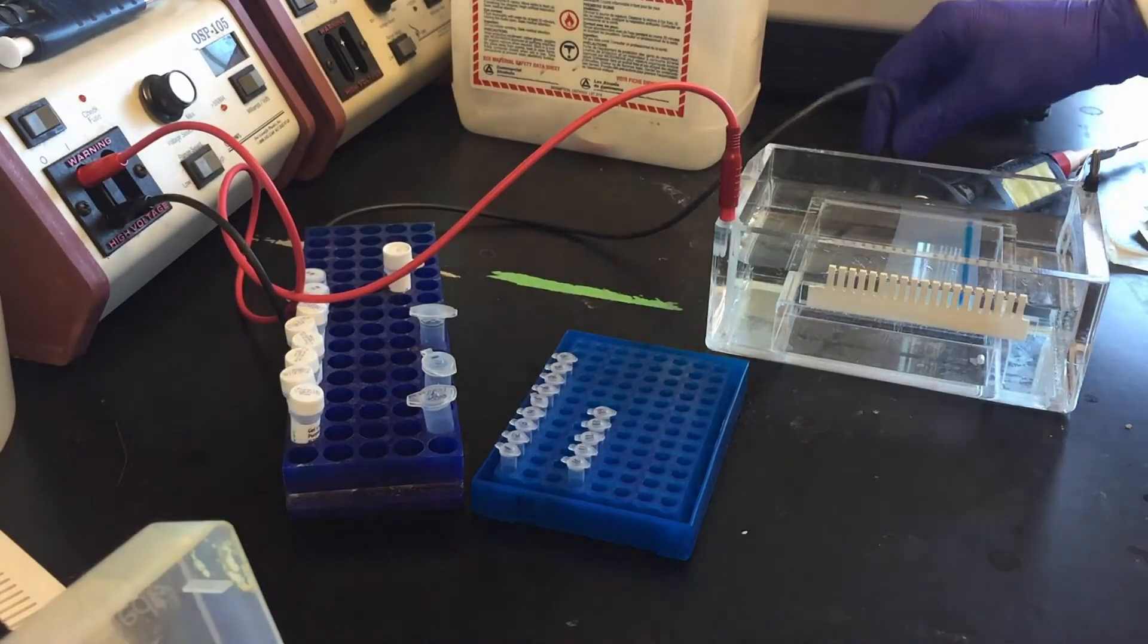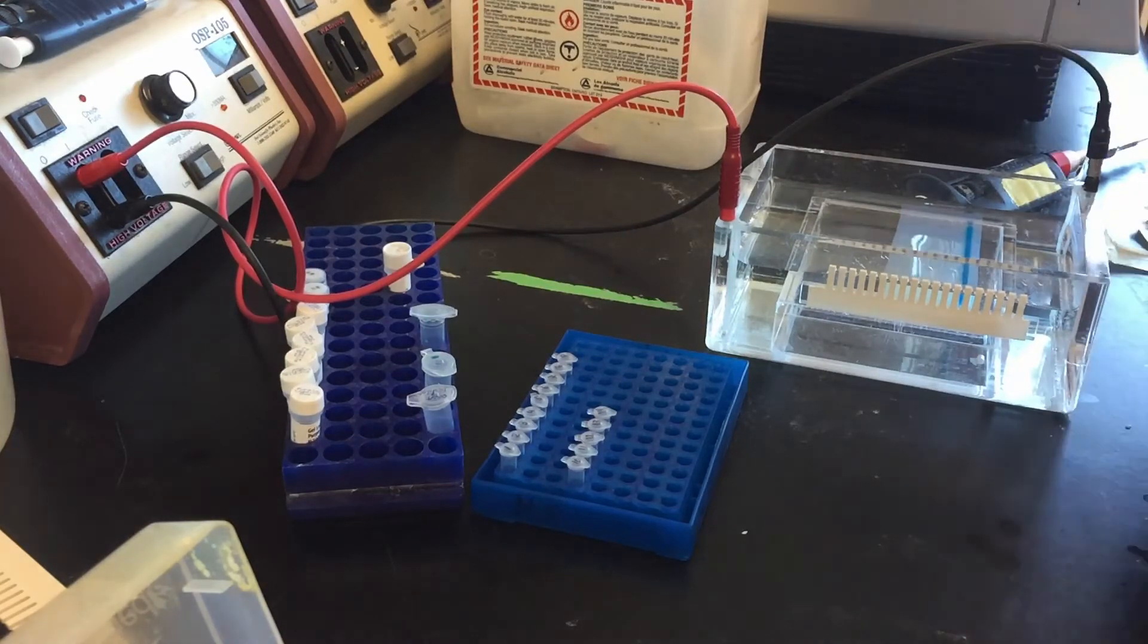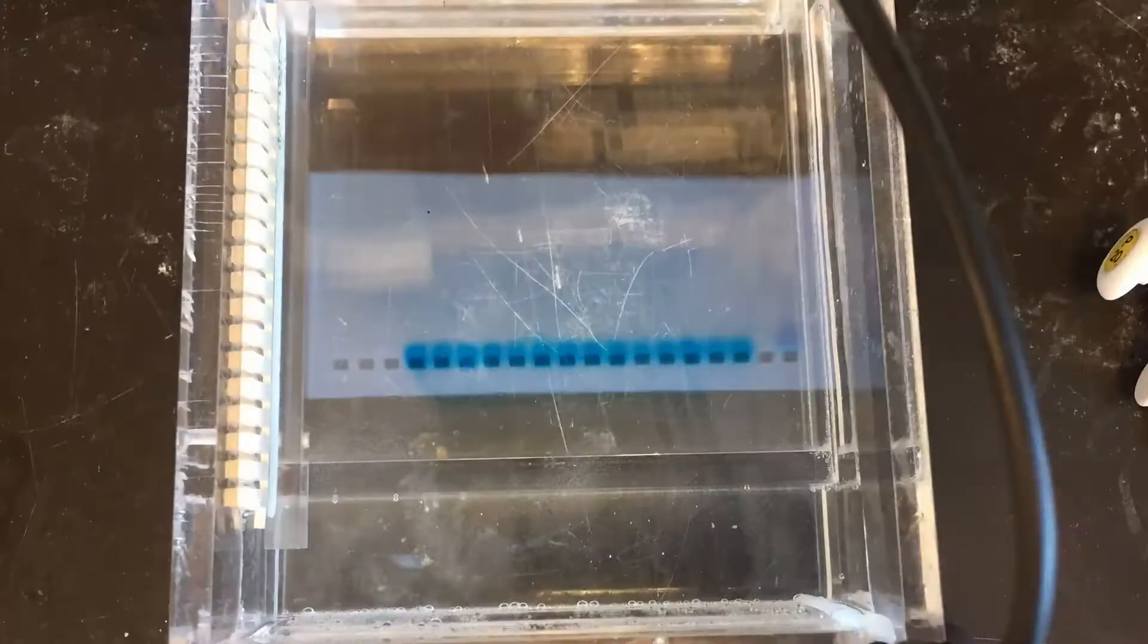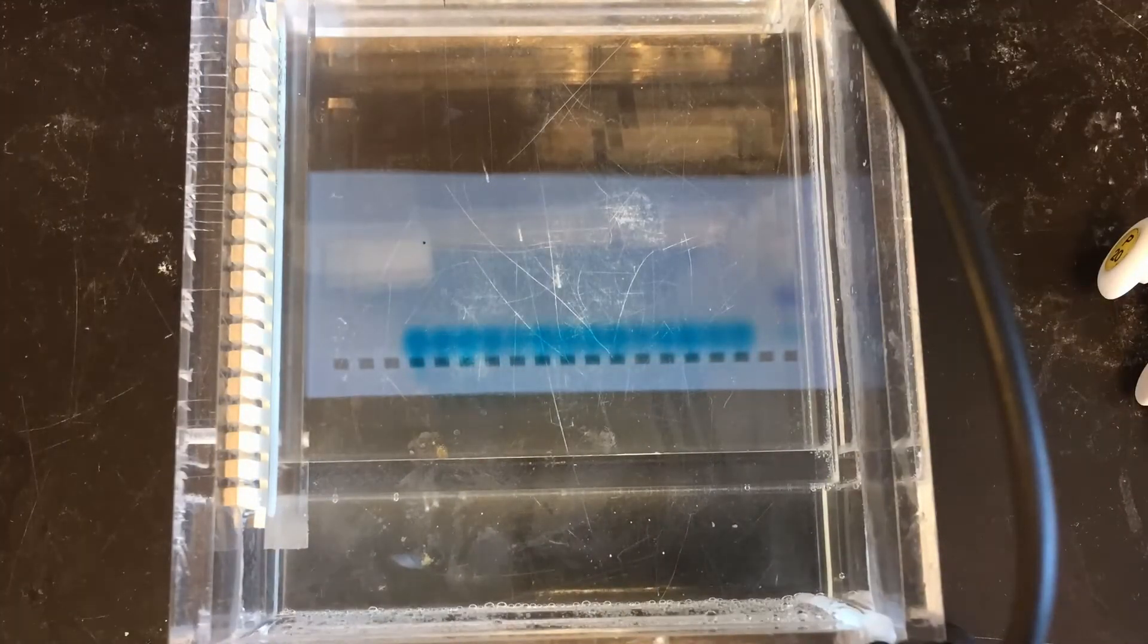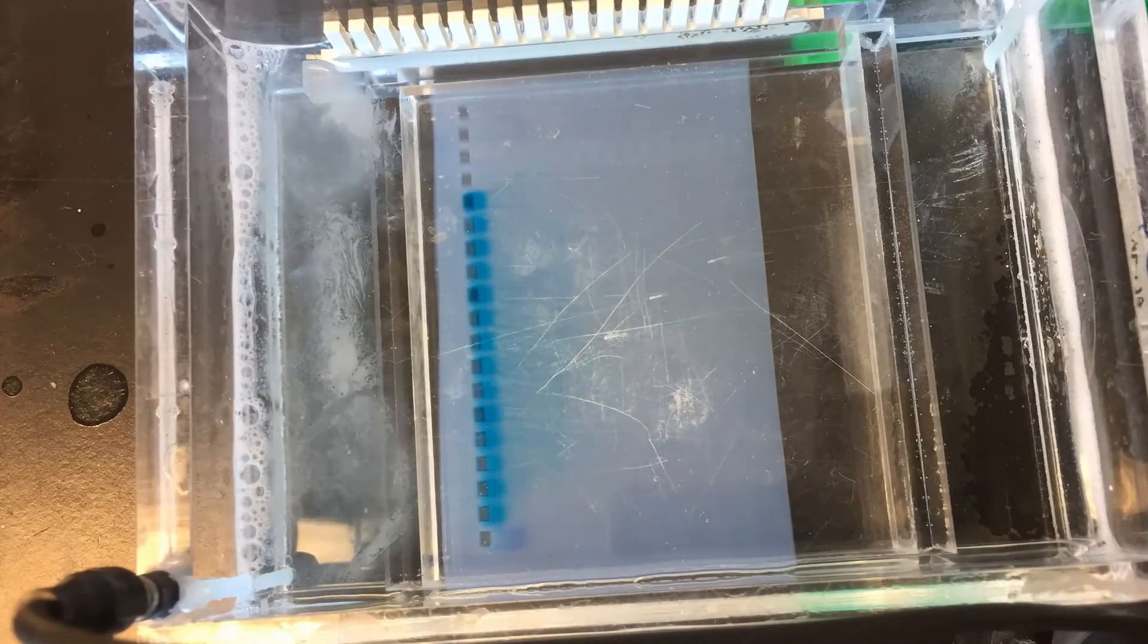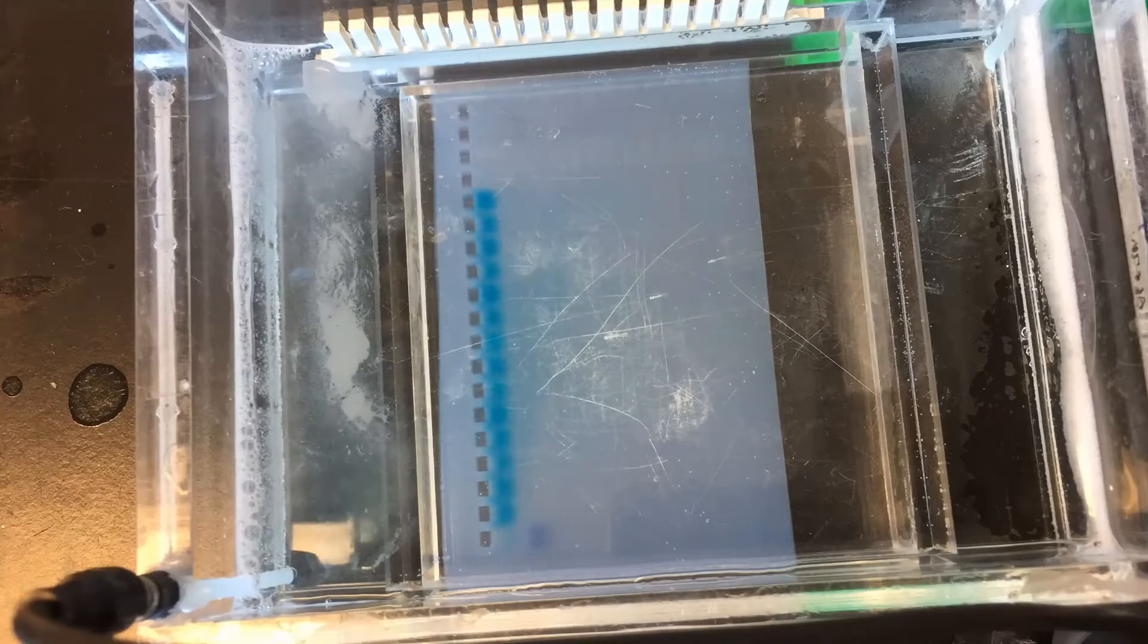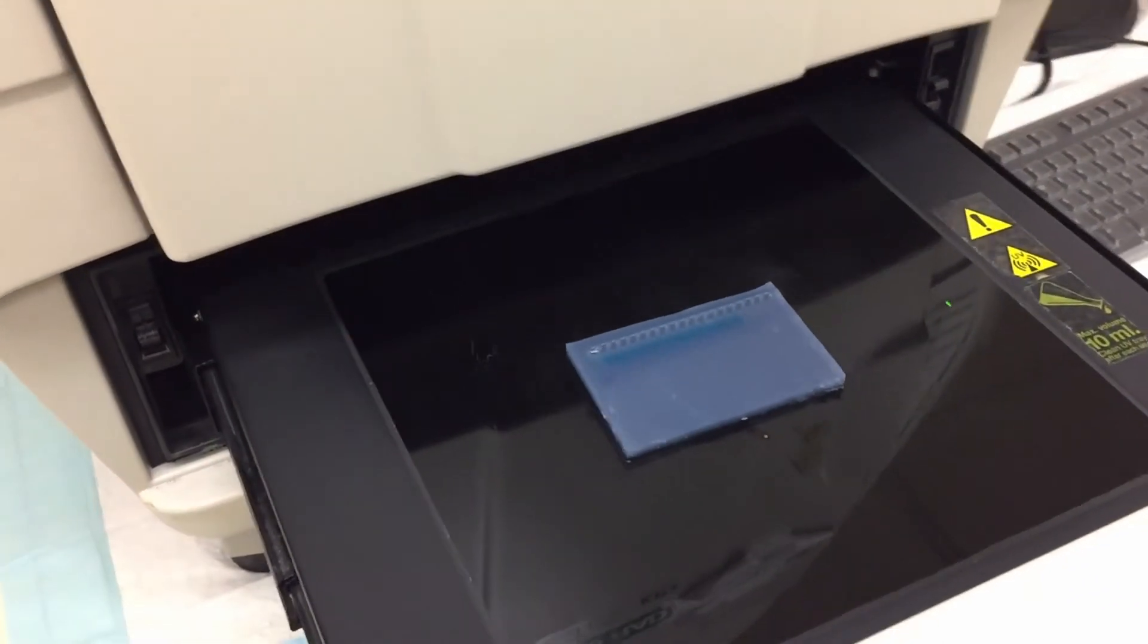When performing the electrophoresis just remember run to red or that DNA is negatively charged and like charges repel. So you want to run the DNA away from the black wire in my case. You can run the gel for about 20 minutes or until the dye is about two thirds down the gel. This depends on the size of the product you're looking for and what percent of gel you're running.